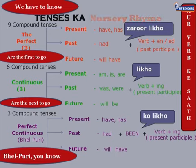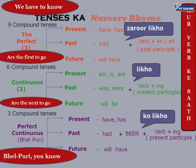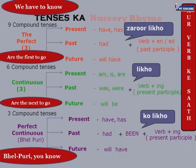And the final three — the perfect continuous tenses, nicknamed 'belpuri' because they are a mixture of all the previous six tenses, just like belpuri is a mixture! The rhyme: 'Three compound tenses we have to know, perfect continuous belpuri you know — have, has, will have been likho, or verb ke saath ING jodo.' So perfect continuous tenses use have/has/will have been plus the ING form. That's all 12 tenses!